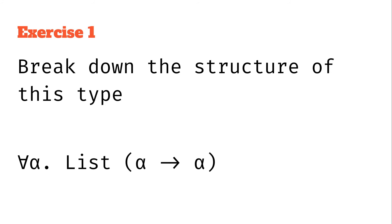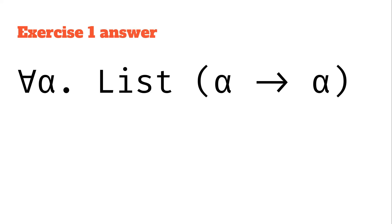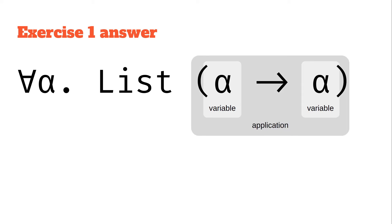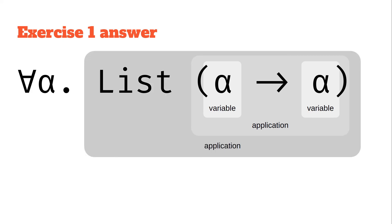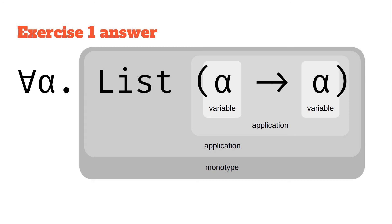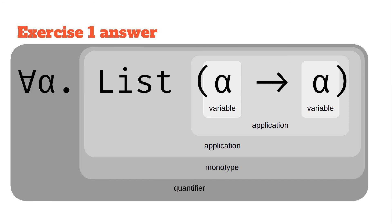Let's look at a practical example: the type for all alpha, list of alpha to alpha. Breaking it down bottom-up — as we did with lambda calculus — the lowest level gives us alpha type variables. The next level up is the arrow type function application, and then we have the list type function application wrapping alpha. Everything underneath forms a monotype. Wrapping it all in the for-all alpha quantifier makes this a polytype. That was a brief introduction to the building blocks of types in Hindley-Milner.